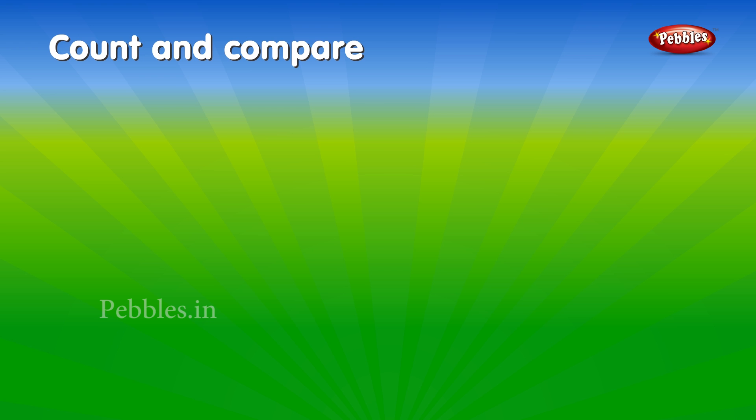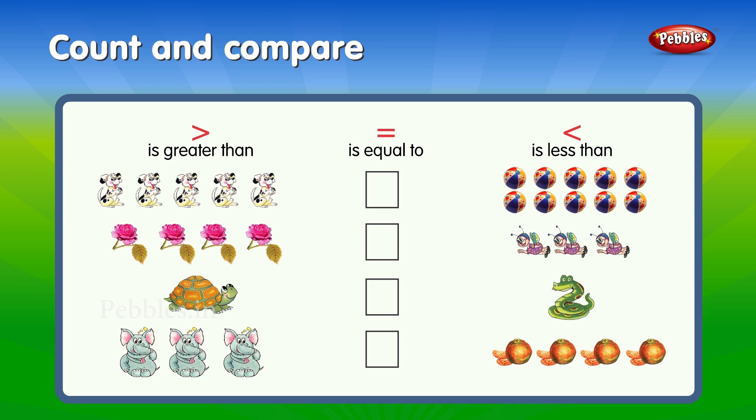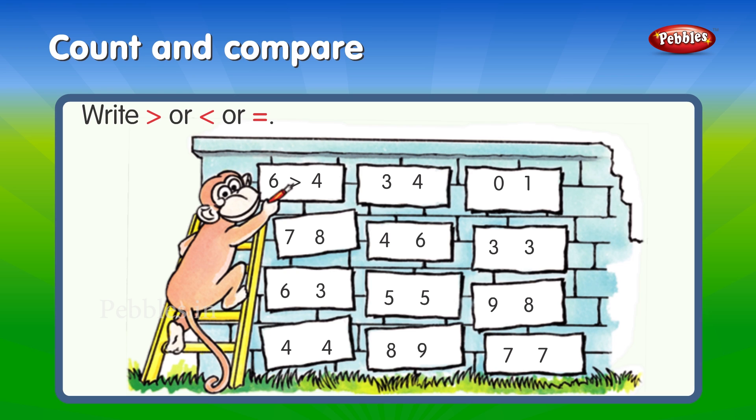Count and compare. Is greater than, is equal to, is less than. Write is greater than, or is less than, or is equal to. Less than, greater than, equal to, less than, less than, equal to, less than, less than, equal to, greater than, equal to.